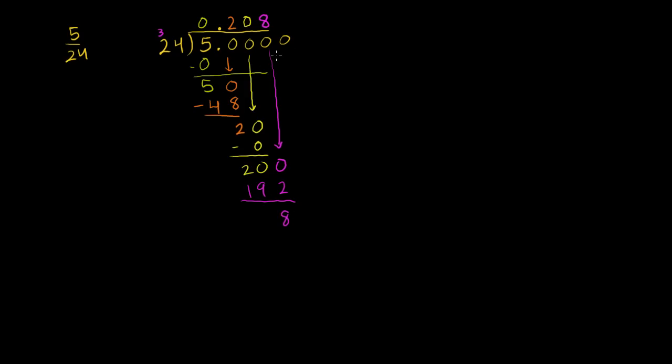Bring down another 0. 24 goes into 80 three times. 3 times 4 is 12. 3 times 2 is 6 plus 1 is 7. And then you have another 80. You bring down another 0. We have an infinite supply of 0's here as we need them. And we're going to have another 80. Once again, 24 is going to go to that three times. And we're going to start repeating these 3's over and over and over again.